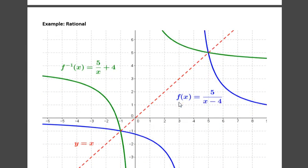A rational function, 5 over x minus 4 in blue, and its inverse, 5 over x plus 4 in green.